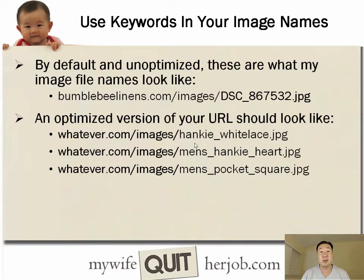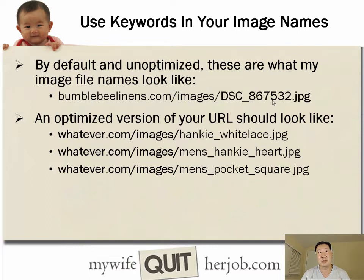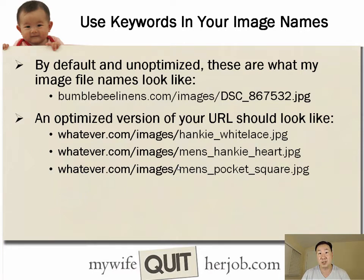You also want to use your keywords as part of your image names. An unoptimized image name would look like bumblebeelinens.com/images/DSC867532 — the file name that comes directly from your digital camera. But an optimized version would include the item name, like bumblebeelinens.com/images/menspocketsquare.jpg. This is important so that your images actually show up in Google image search.